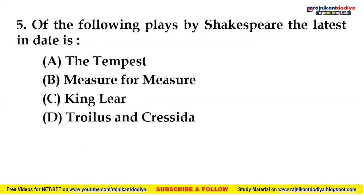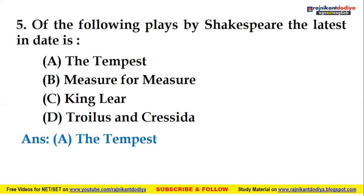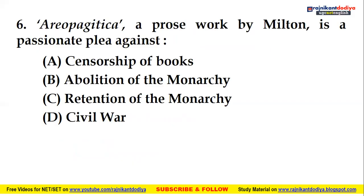Fifth question: Of the following plays by Shakespeare, which is the latest in date — The Tempest, Measure for Measure, King Lear, or Troilus and Cressida? The right answer is The Tempest — the last play by William Shakespeare, written around 1610-11.